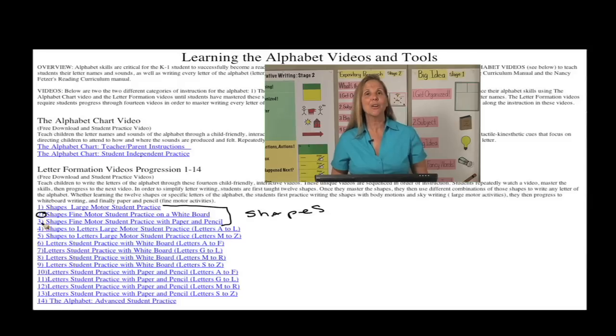The second and third video deal with shapes as well, but now they're going to go to the fine motor activity where they're actually going to use a whiteboard and write the shapes down. And then the last of the shapes will be with paper and pencil. Once they can write all 12 shapes with paper and pencil, then we move to the letter writing activities.